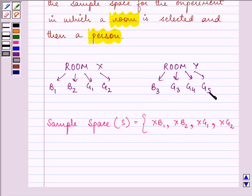And if we are selecting room Y, then we have Y with 3rd boy, Y with the 3rd girl, then the 4th girl and then the 5th girl. Right?